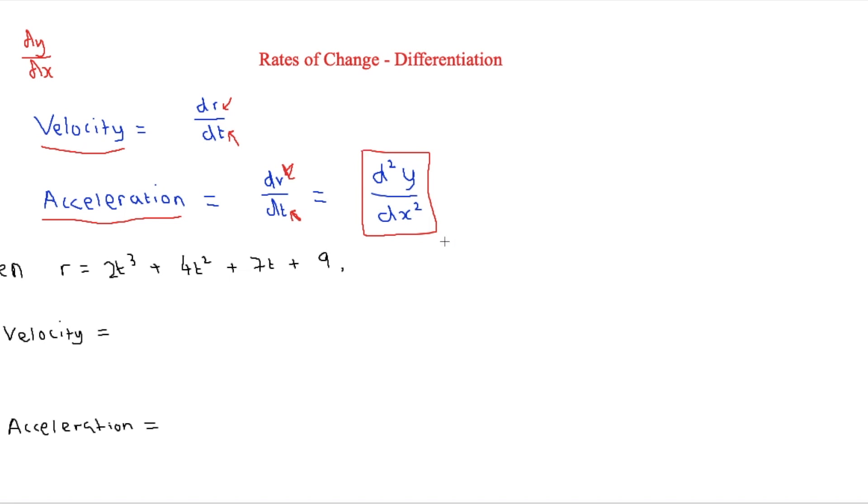And that's essentially saying that if you had a function, you would find the velocity of that function first, and then you would find the acceleration again. That's done by differentiating it twice.